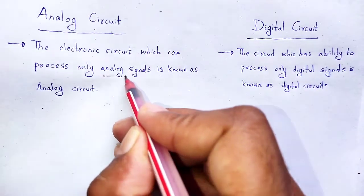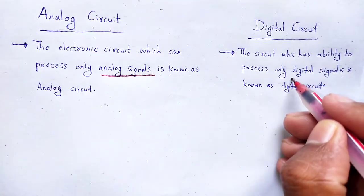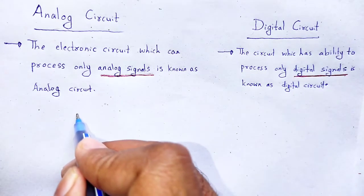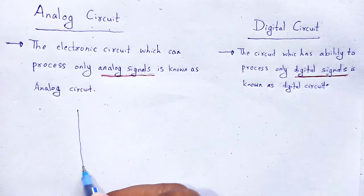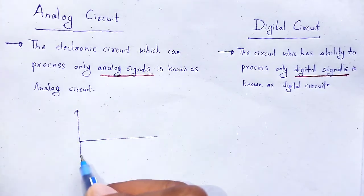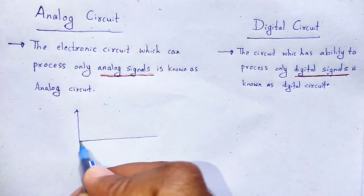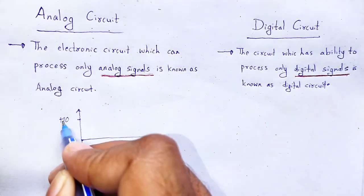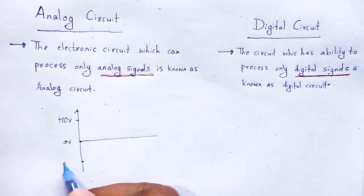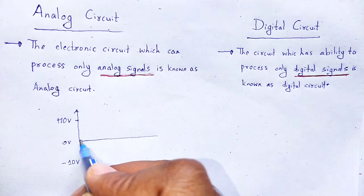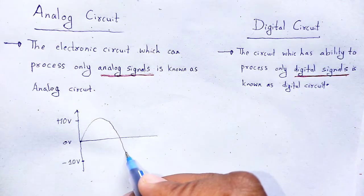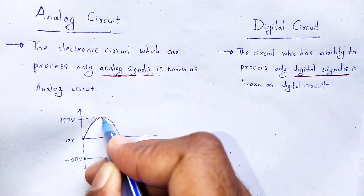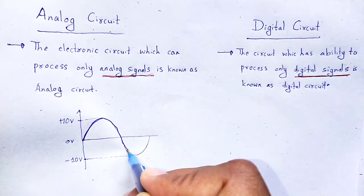So, analog signal is used in analog circuits, whereas digital signals are used in digital circuits. What is analog signal? If we plot a graph, a graphical view, it looks like a continuous curve. This will be the voltage curve ranging from 0 voltage to plus 10 voltage. That kind of signal is the analog signal.